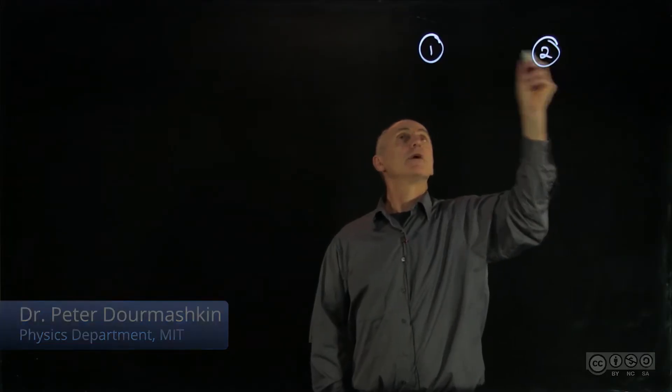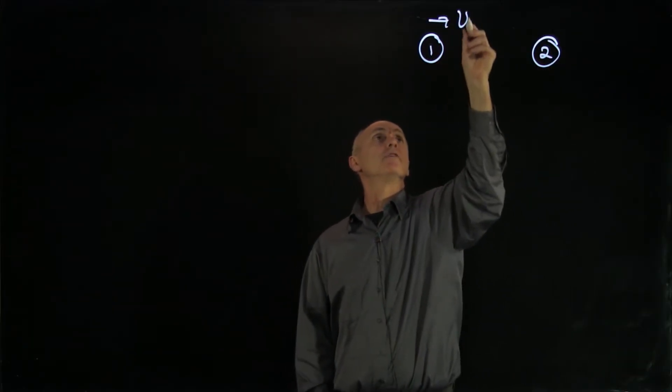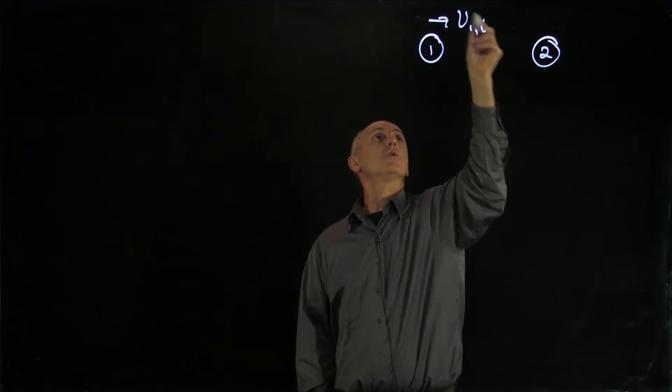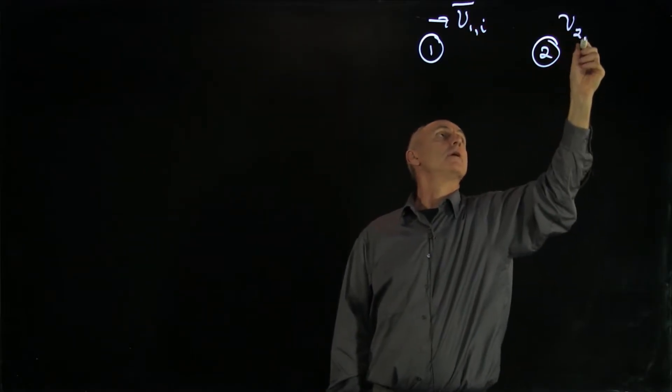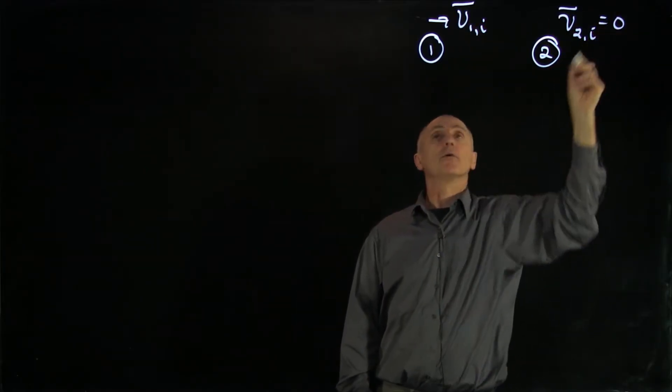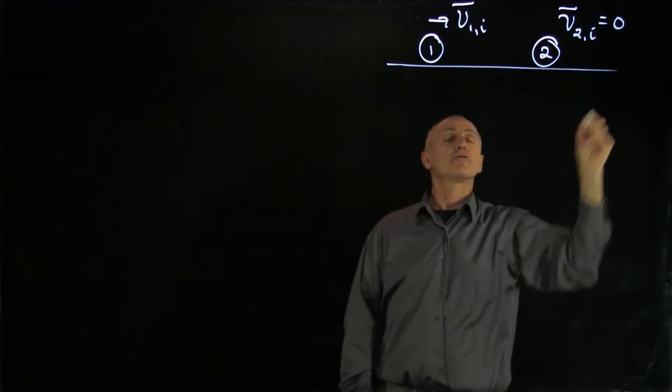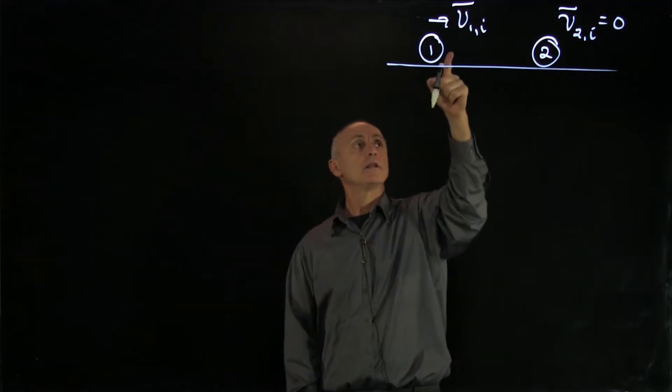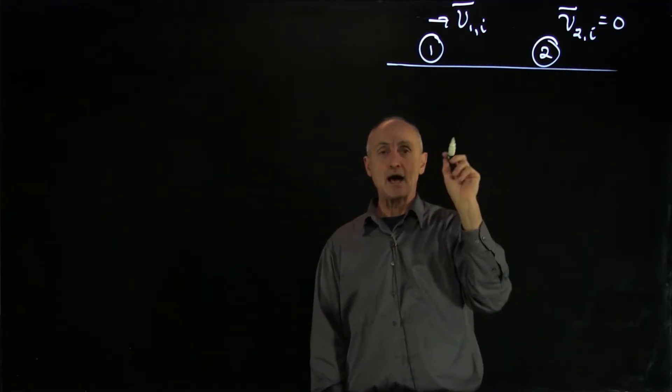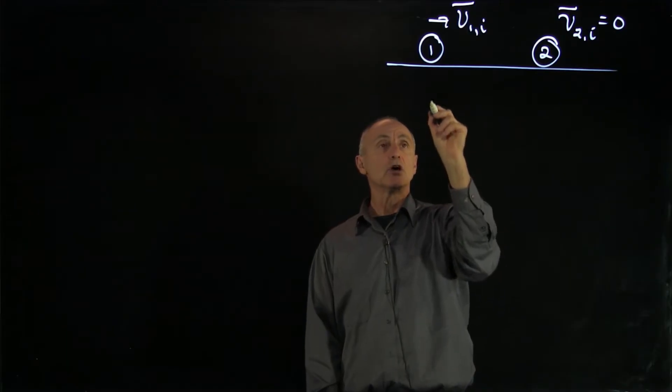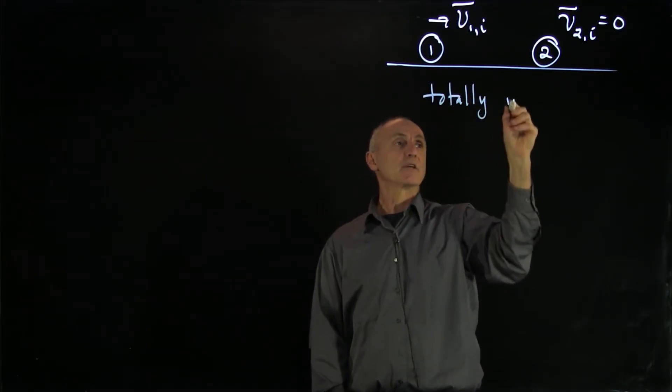Let's analyze a one-dimensional collision where we're in the laboratory reference frame and we have V1 initial and V2 initial is zero. It's a frictionless surface, but there's a collision here. And now we're going to make this collision totally inelastic.